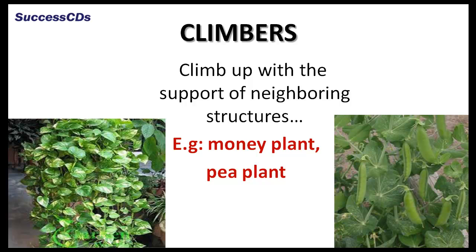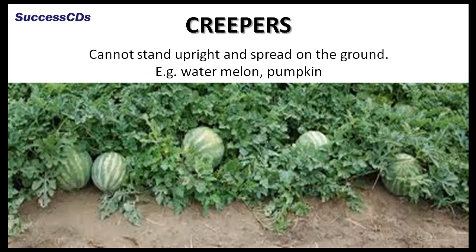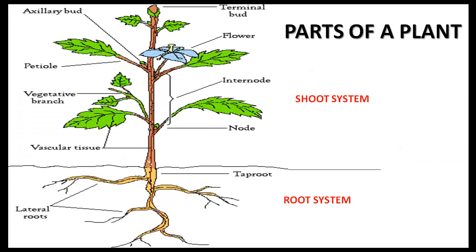Have you ever seen a money plant or a pea plant? These plants are other than herbs, shrubs and trees — they are called climbers. They have weak stems and climb up with the support of neighbouring structures. The watermelon plant also has weak stems, cannot stand upright, and spreads on the ground; such plants are called creepers.